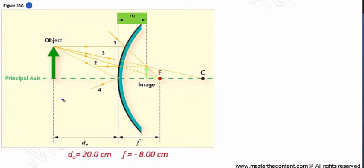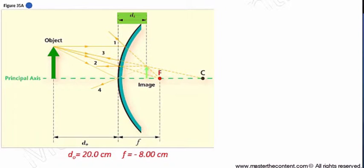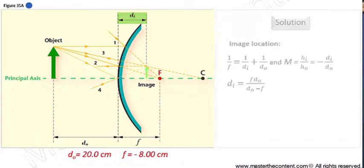Note, though, that the focal length is negative, since we're dealing with a convex mirror. From the information provided, we have enough to solve for the image distance. Let's do that now.